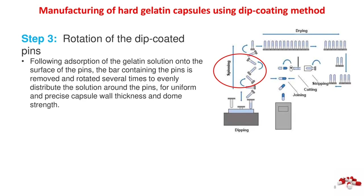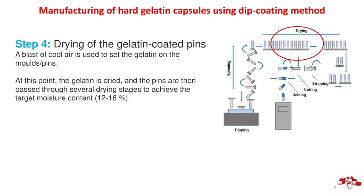Because the molds are below the gelling temperature, the gelatin begins to form a thin gelatin layer or film on the molds. The rows of pins are arranged so that caps are formed on one side of the machine while bodies are simultaneously formed on the opposite side. Step 3 — Rotation of the dip-coated pins: following adsorption of the gelatin solution onto the surface of the pins, the bar containing the pins is removed and rotated several times to evenly distribute the solution around the pins for uniform and precise capsule wall thickness and dome strength. Step 4 — Drying: a blast of cool air is used to set the gelatin on the molds/pins, after which the gelatin is dried, and the pins are passed through several drying stages to achieve the target moisture content of 12–16%.